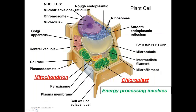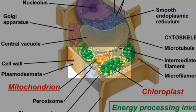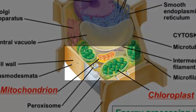Plant cells have both mitochondria and chloroplasts. Mitochondria are the organelles that carry out cellular respiration. Cellular respiration converts chemical energy in food, like the bond energy between carbons in a biomolecule, to ATP energy. This ATP is then used by the cell to do cellular work, like transport of substances across a membrane.